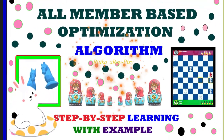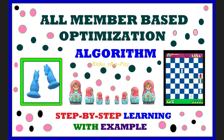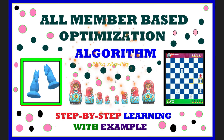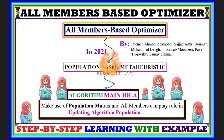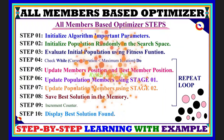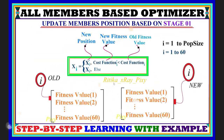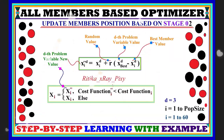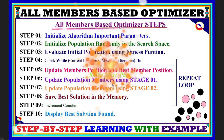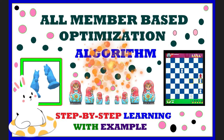This video is based on a new metaheuristic optimization algorithm named the All Member Based Optimization algorithm. We will try to understand what this algorithm is all about, how it is working, the various steps used in this algorithm, mathematical models to update agents' positions in the search space, and the algorithm flowchart. Step by step, we will understand how to find the optimal solution.